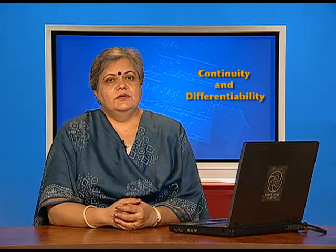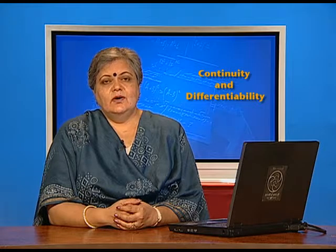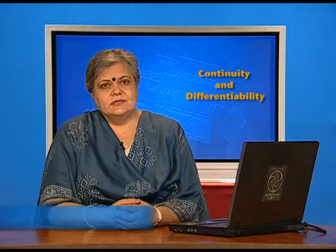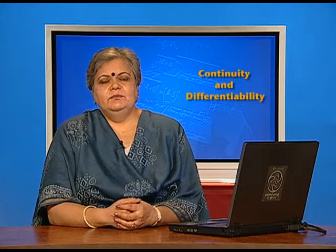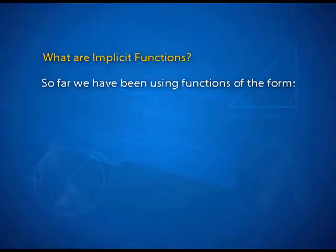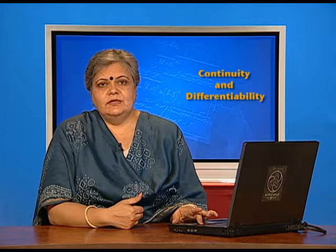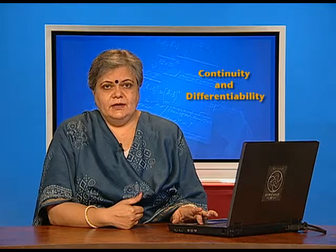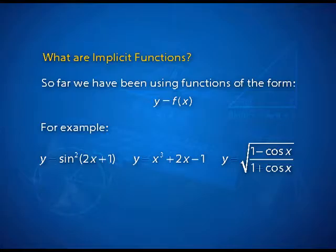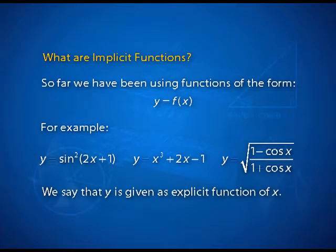Hello viewers. Today we are going to discuss two special methods of finding the derivatives of implicit functions and also the inverse trigonometric functions. So far we have been using functions of the form y equal to f of x, where y is equal to sin square 2x plus 1, or y equal to x cube plus 2x minus 1, or y equal to under root of 1 minus cos x by 1 plus cos x. Such functions where y is clearly expressed as a function of x are called the explicit functions of x.